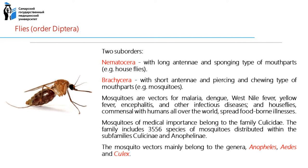Dipterans possess sensory organs known as halteres, which act as gyroscopic sensors of rotational movement and allow dipterans to perform advanced aerobatics. Diptera is a large order containing about one million species including horse flies, crane flies, hover flies, and others, and is of considerable ecological and human importance. For example, mosquitoes are vectors for malaria, dengue, West Nile fever, yellow fever, encephalitis, and other infectious diseases. House flies, common wherever humans live, spread foodborne illnesses.